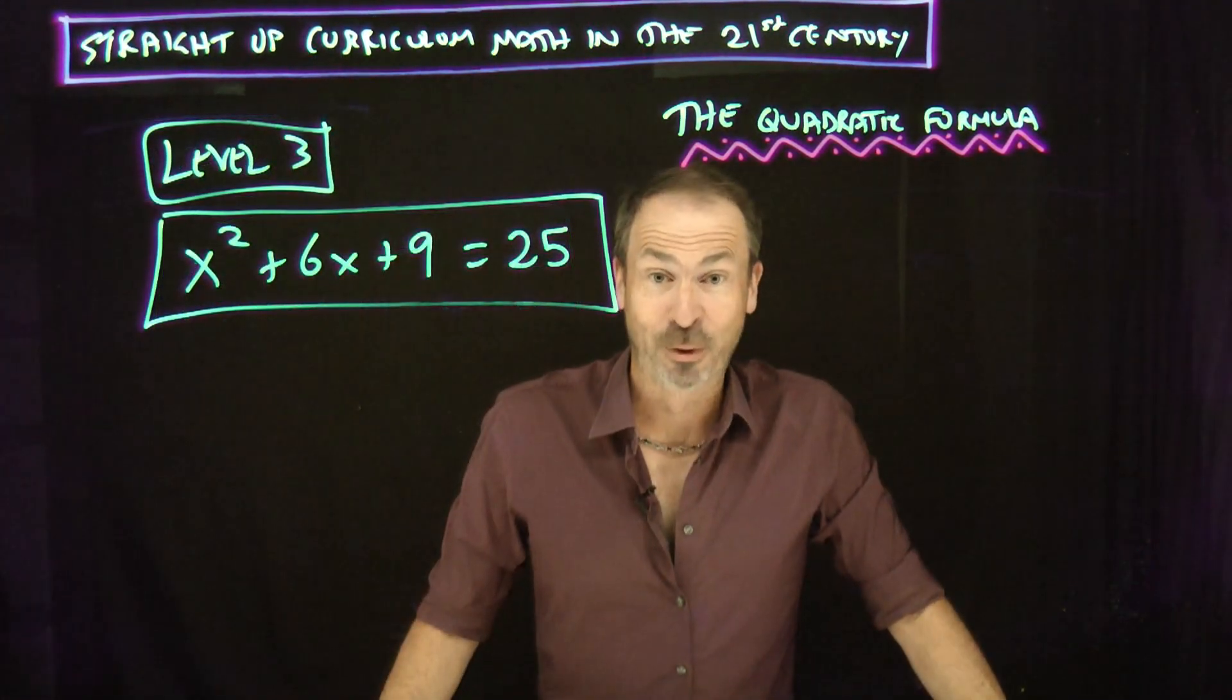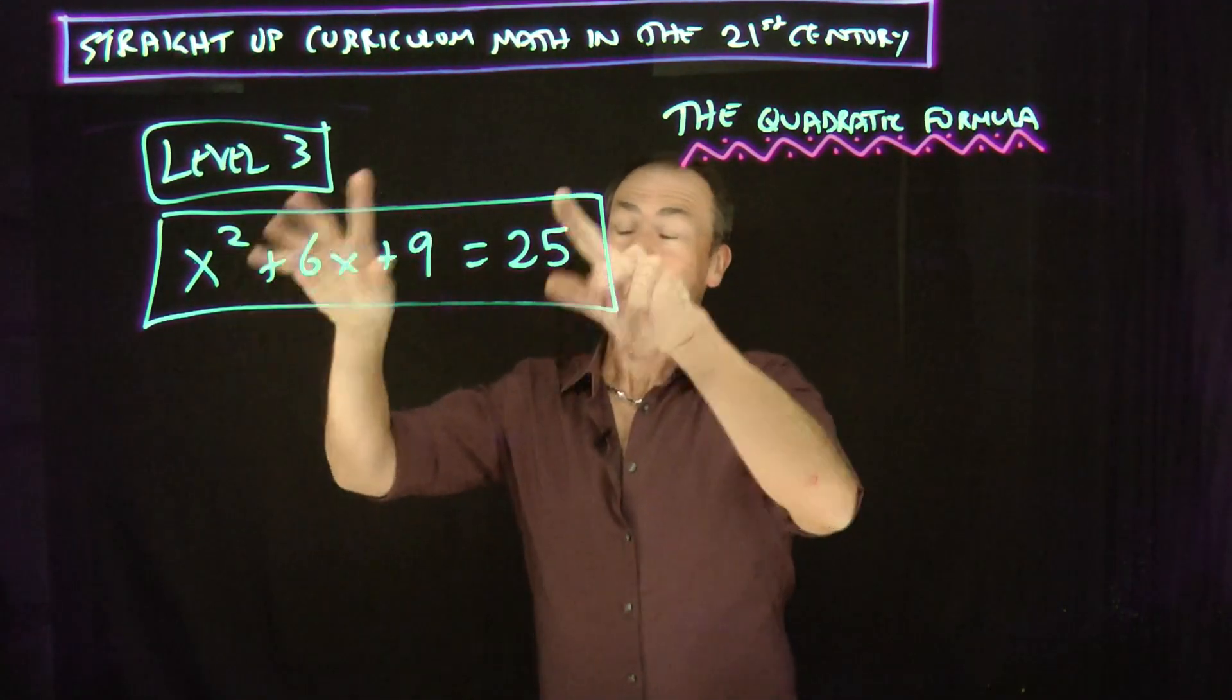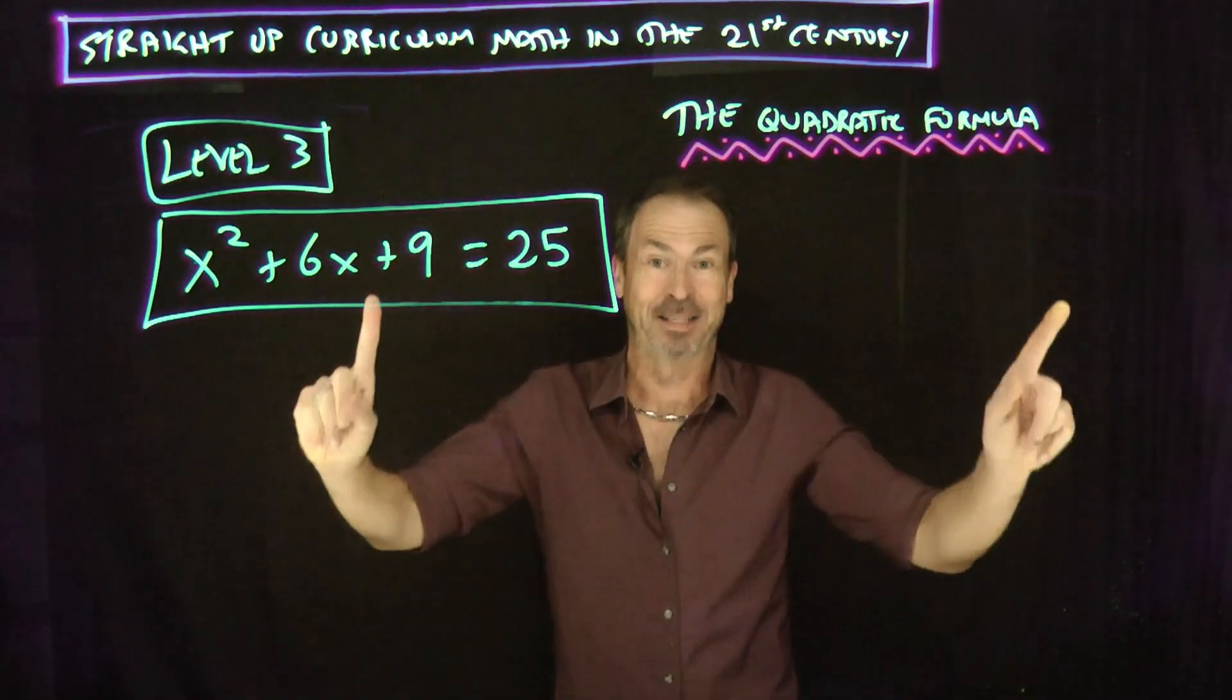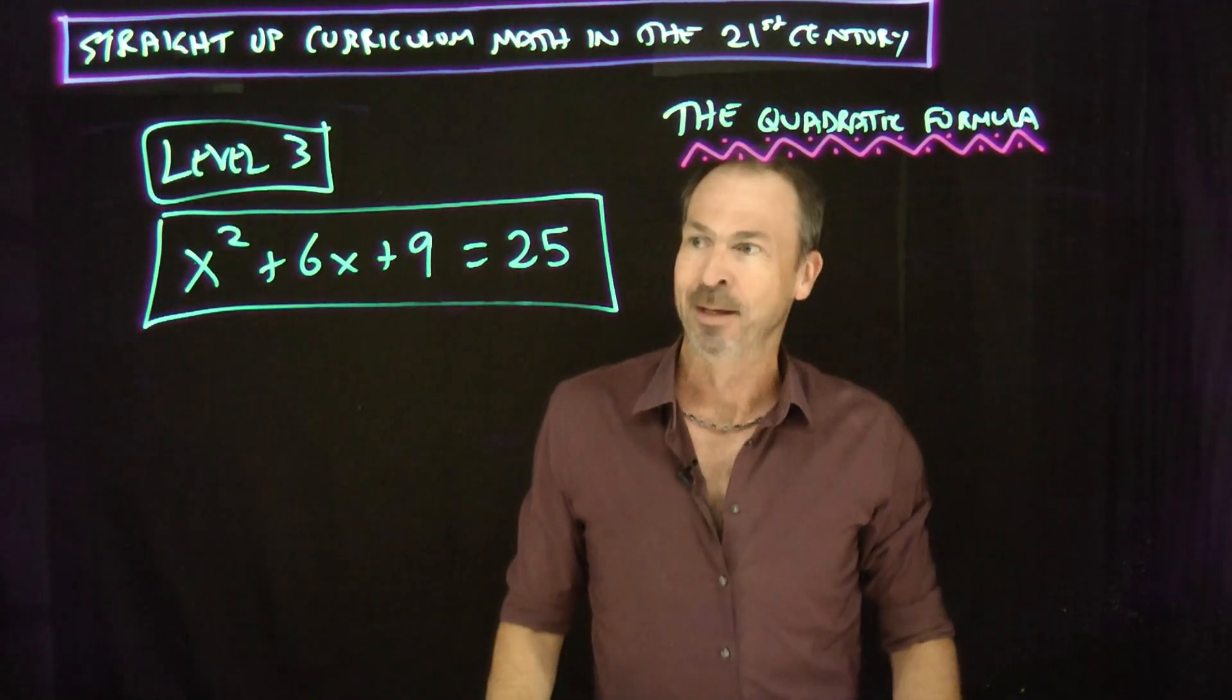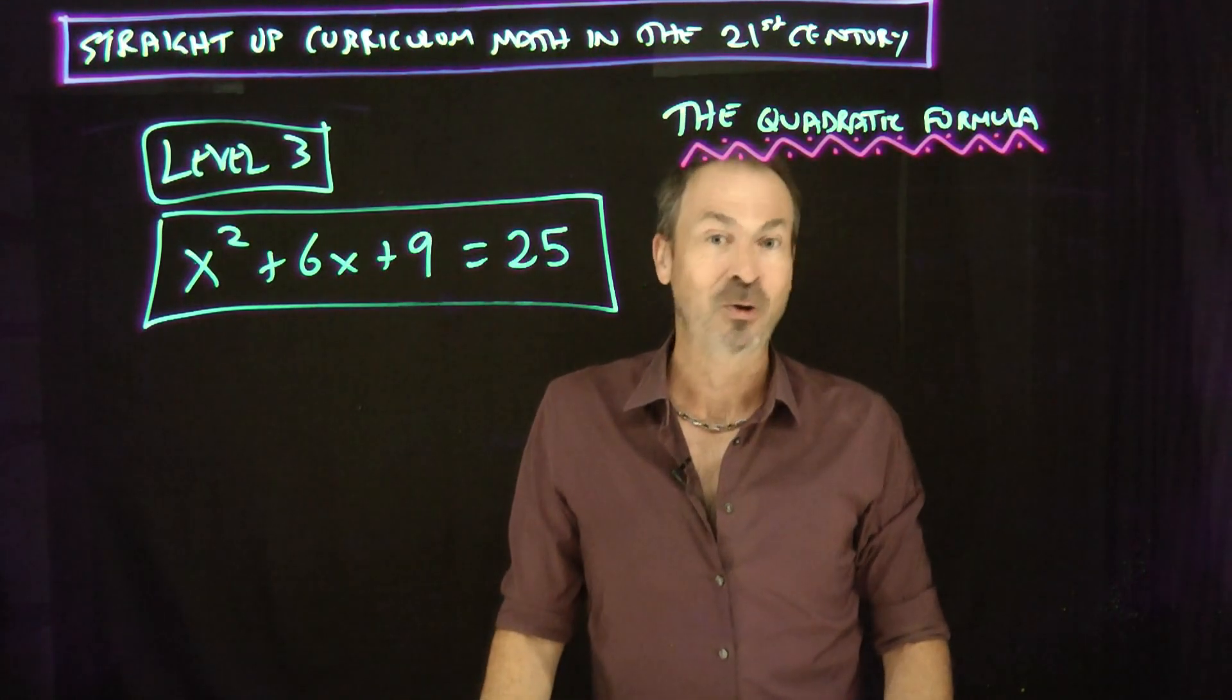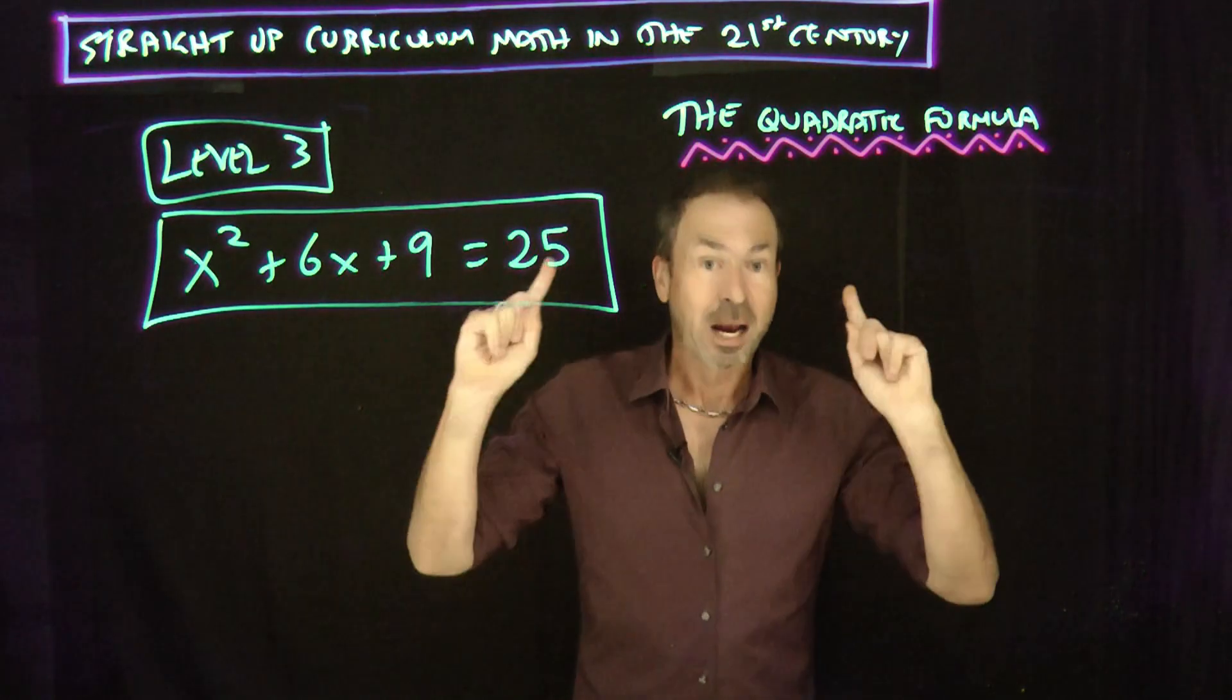But now we're ready for level 3. Alright. Welcome to level 3 and look at it. x squared plus 6x plus 9 equals 25. Oh my goodness. Level 1 and level 2, they were fine. That one looks like a whole different ball game. Whoa! I'm having an emotional reaction. This is the first step in mathematics. When you're solving a problem, step number 1 in problem solving is be human, have an emotional reaction and acknowledge it. I'm scared. I'm actually scared of that one.